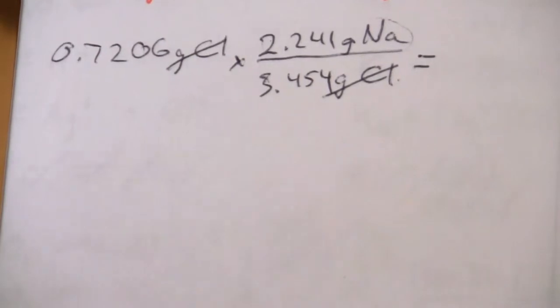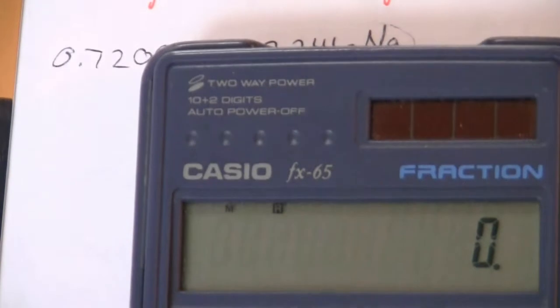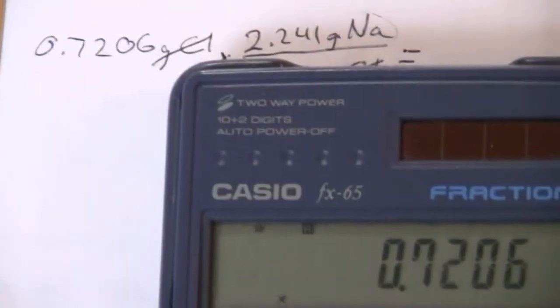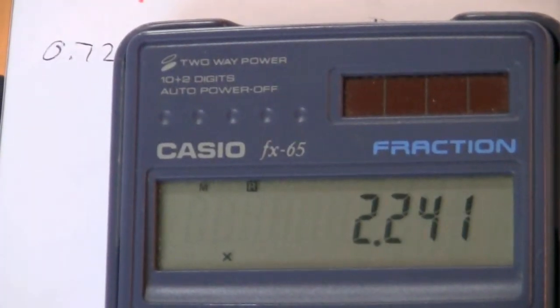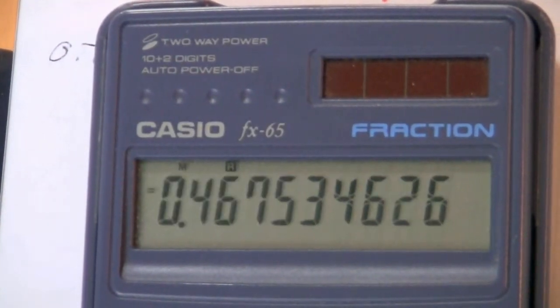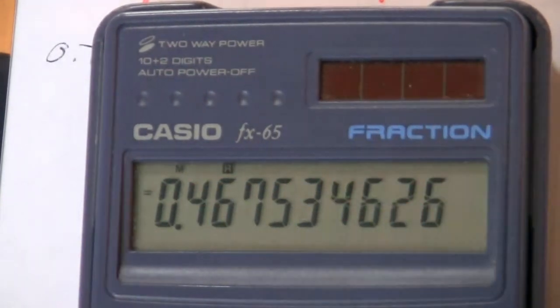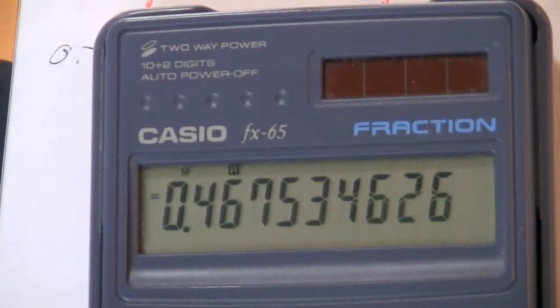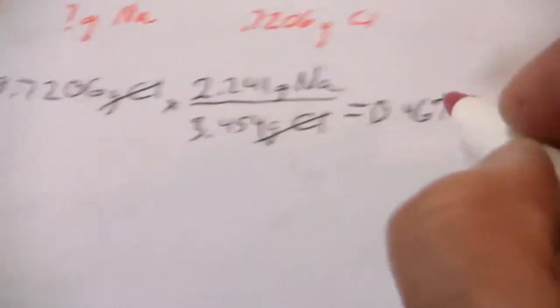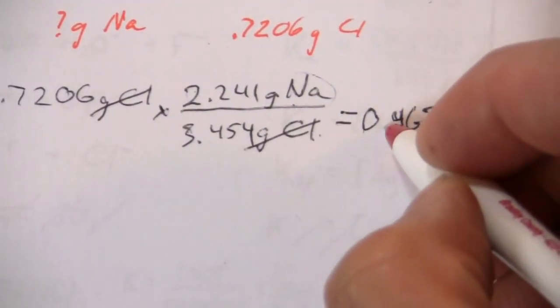And what we get here is we put this in the calculator and we have 0.7206 times 2.241 divided by 3.454. And so what we end up with is 0.4675. Again, we can keep four significant figures. So 0.4675 grams, and that's grams of sodium.